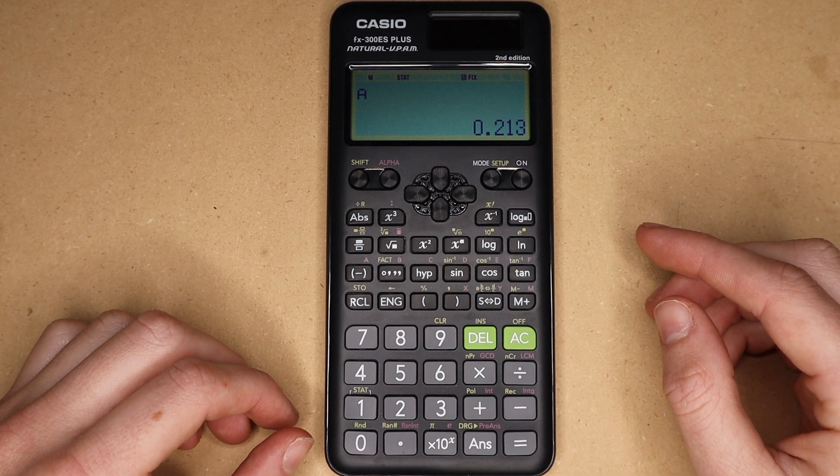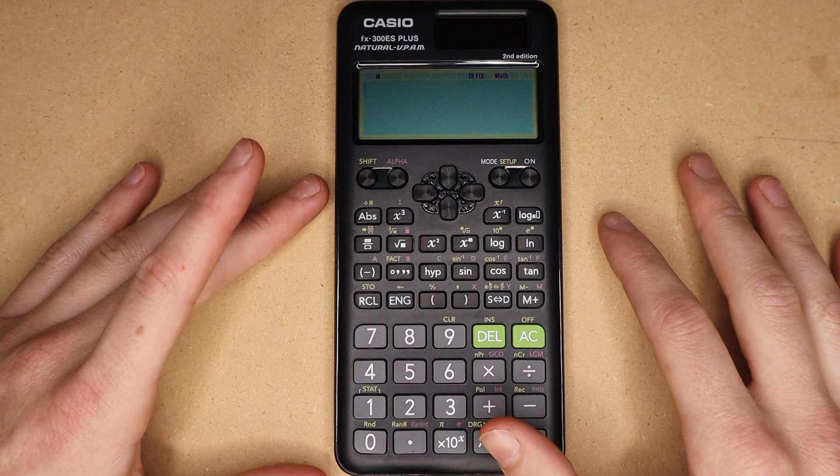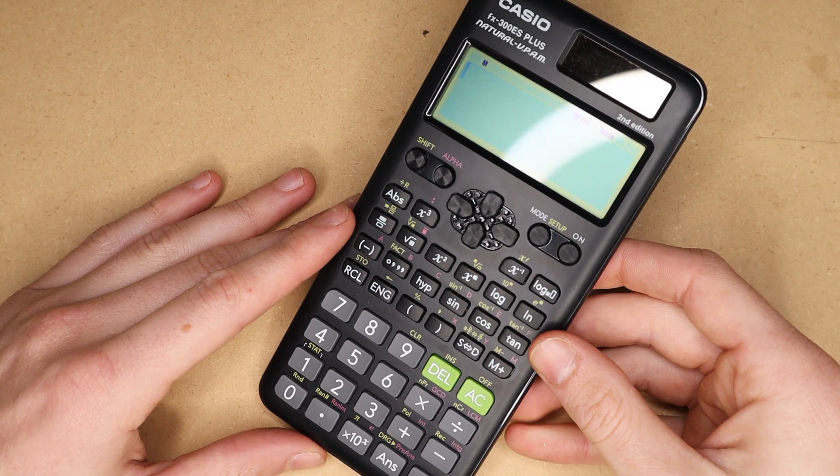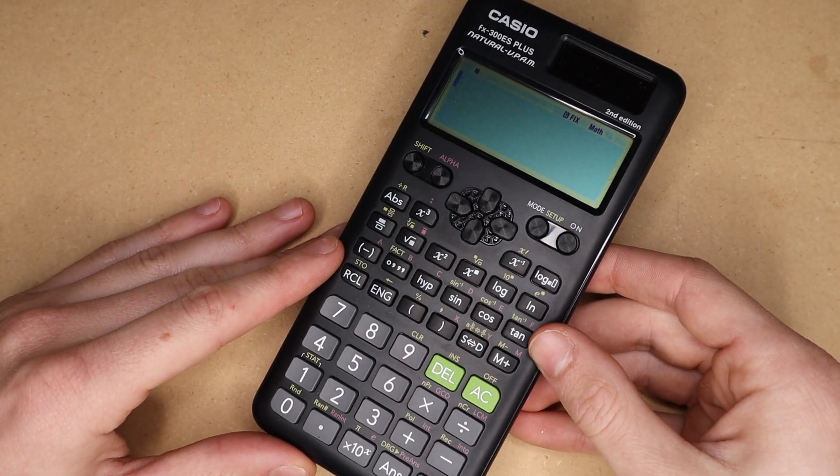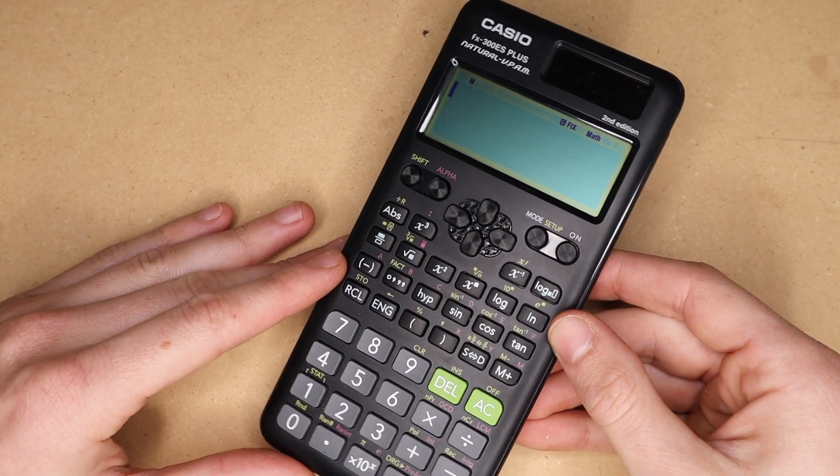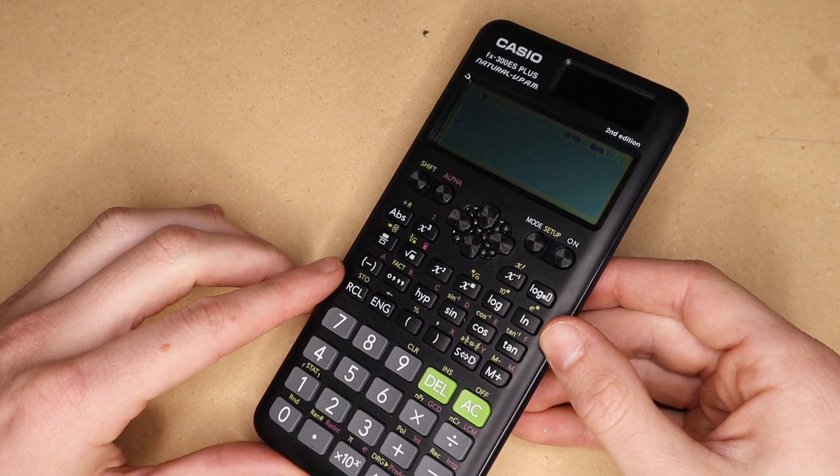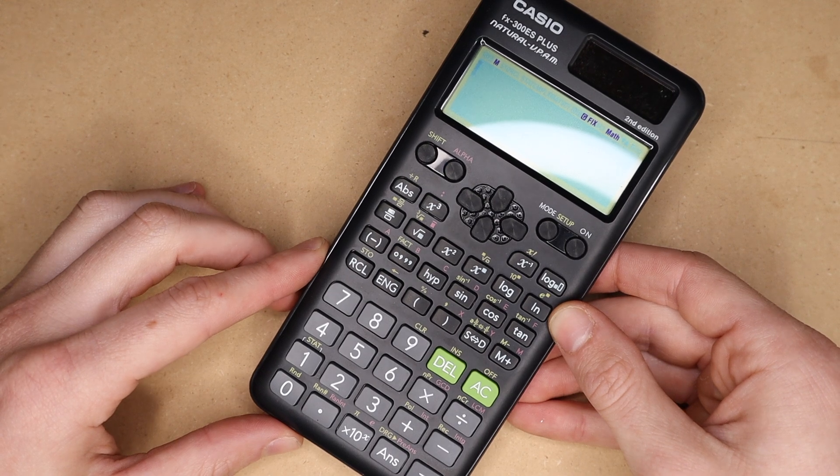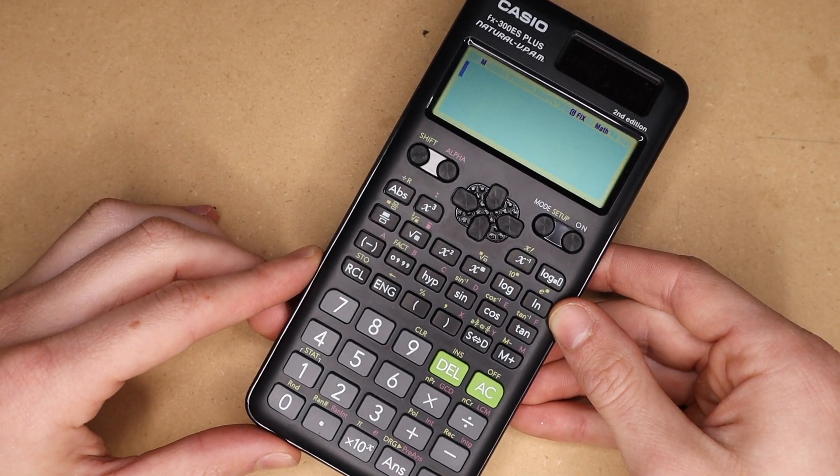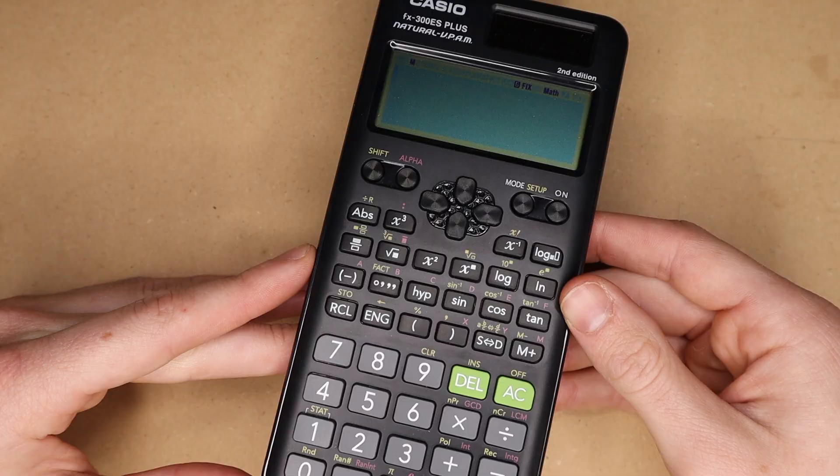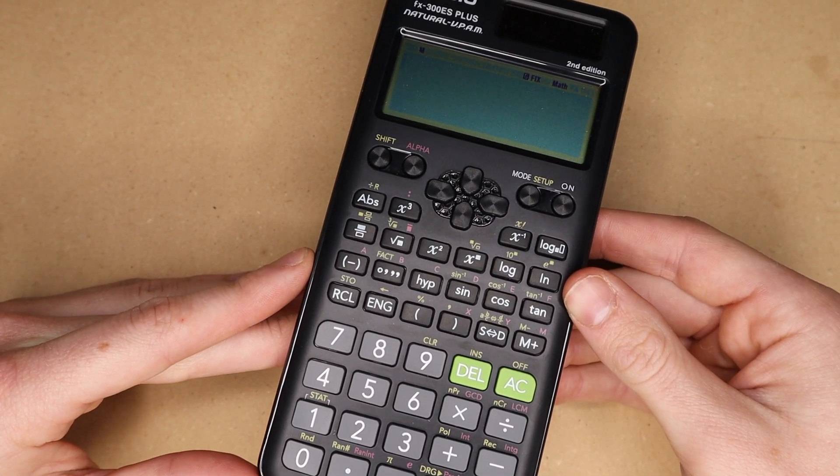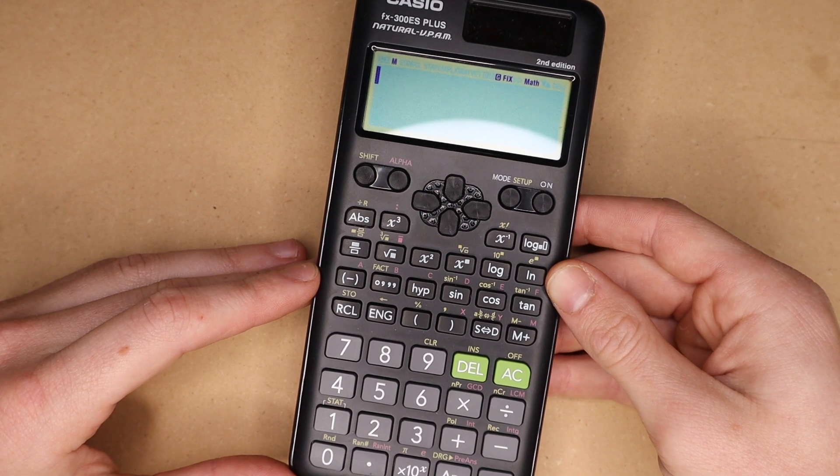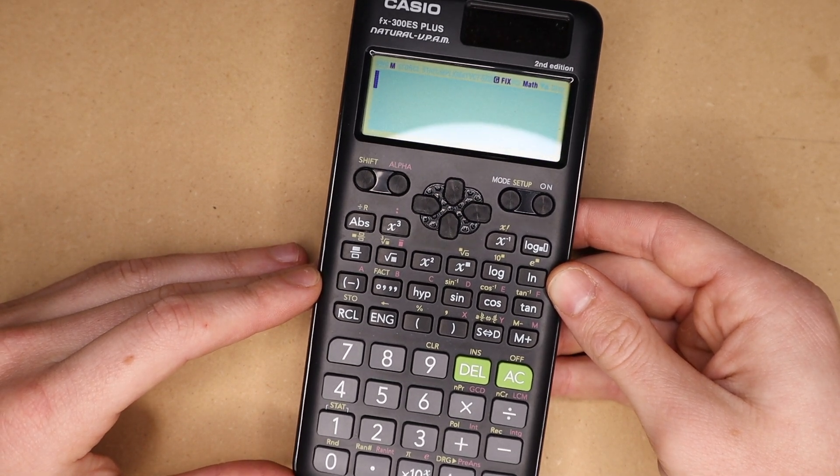But anyways that's about it for this review, hopefully you found this useful. In general I'd say you get a pretty good amount of features on this calculator for the price, however if you plan to be using a scientific calculator throughout high school or throughout college I would definitely recommend coughing up the extra five or ten dollars to get yourself one that has a few more features. But if you just need these basic features that I went over in this video I would say the FX 300 ES plus is a pretty good way to go. Thanks for watching.